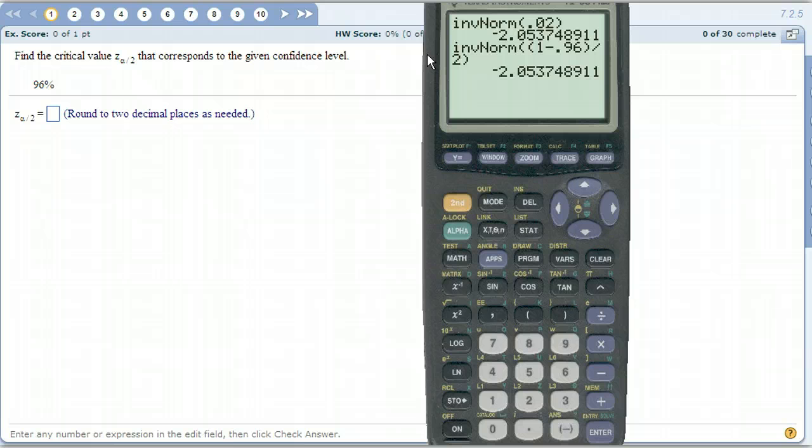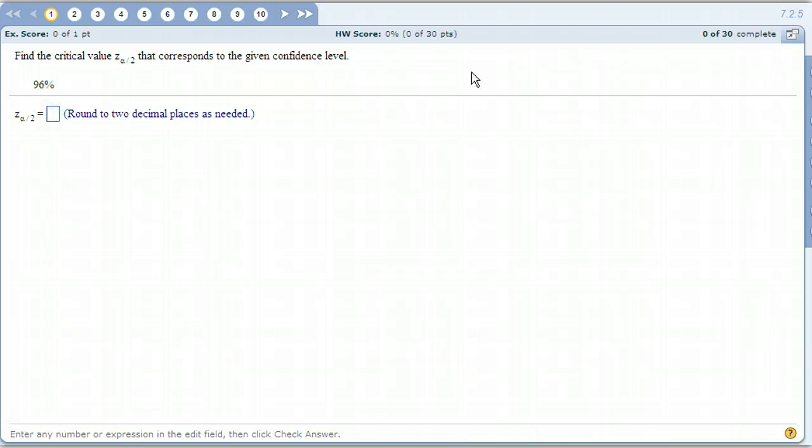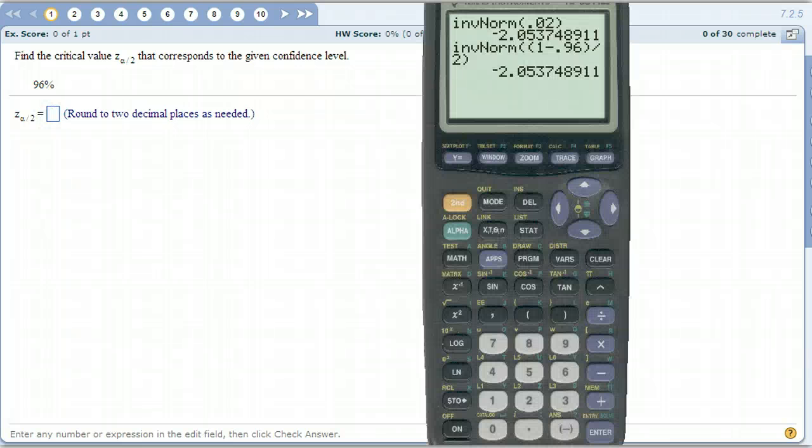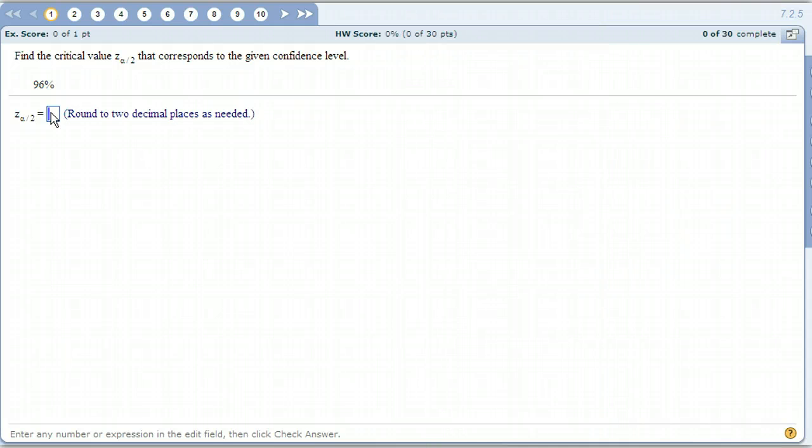Now, the important thing to remember, when it's asking for this, it's wanting the positive version. Just like it was last time we were finding critical values. So just remember, take that negative sign off of there. So to two decimal places, this would be negative 2.05, or positive. Take the positive version of the number.